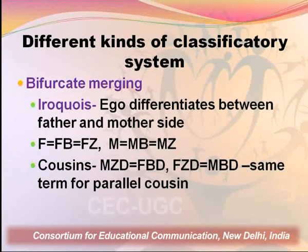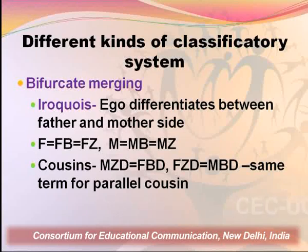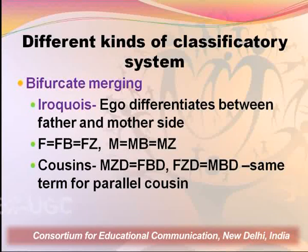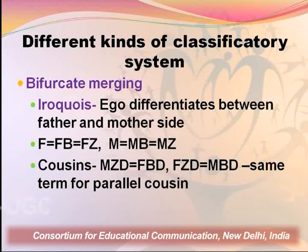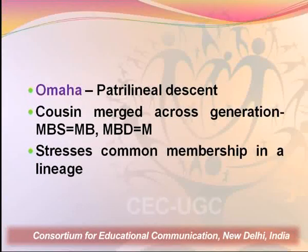Looking at cousins, there are two types to understand. One is the parallel cousin — children of same-sex siblings — that is, my mother's sister's children and my father's brother's children. The other is the cross cousin — children of opposite-sex siblings — that is, father's sister's and mother's brother's children. In many classificatory terminologies, the same term is used for both cross cousins and parallel cousins. The second type of bifurcate merging is found in the Omaha tribes, a patrilineal descent group, where cousins are merged across generations — mother's brother's son equals mother's brother, and mother's brother's daughter equals mother.